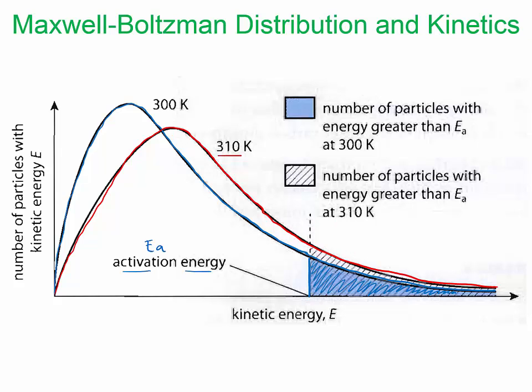And so because it becomes more spread out, you get all the ones from the blue region plus all of these that can cross the activation barrier and result in an effective collision and result in product forming.